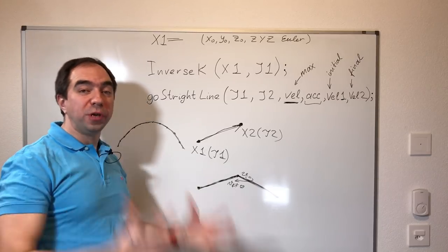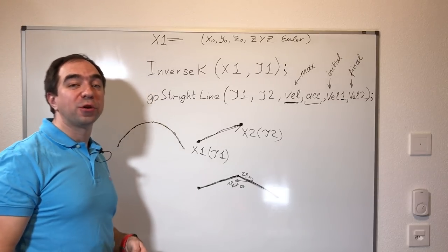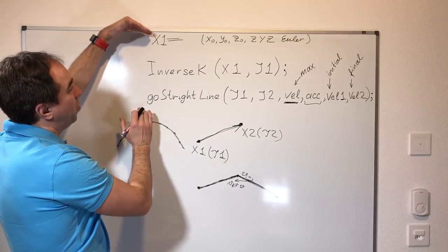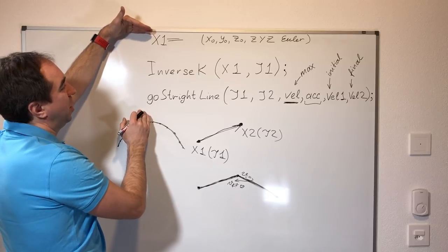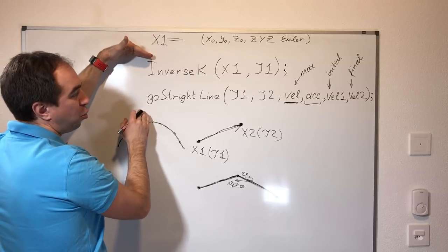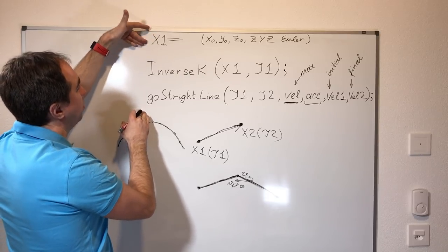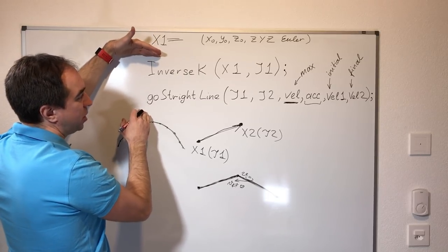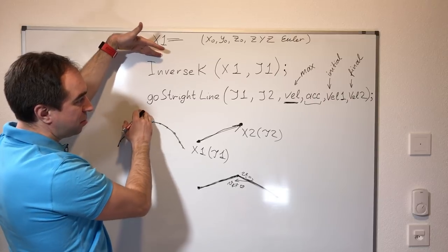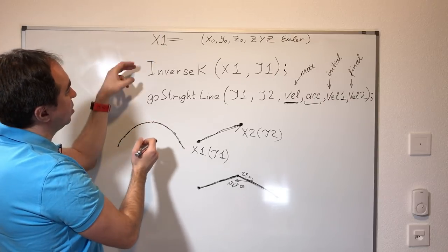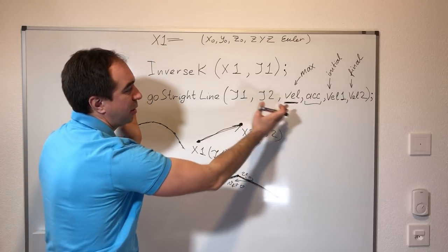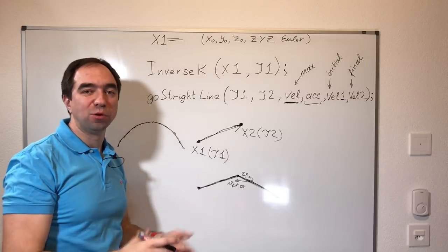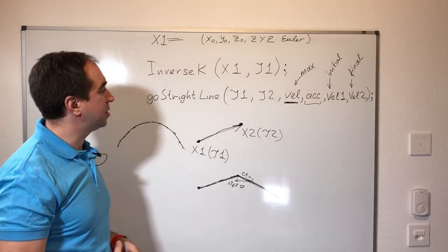So in order to easily use this Arduino code, you need to master these commands — essentially two commands: the inverse K call (which is straightforward) and the go-straight-line command (a little more complex, but still not really complicated).